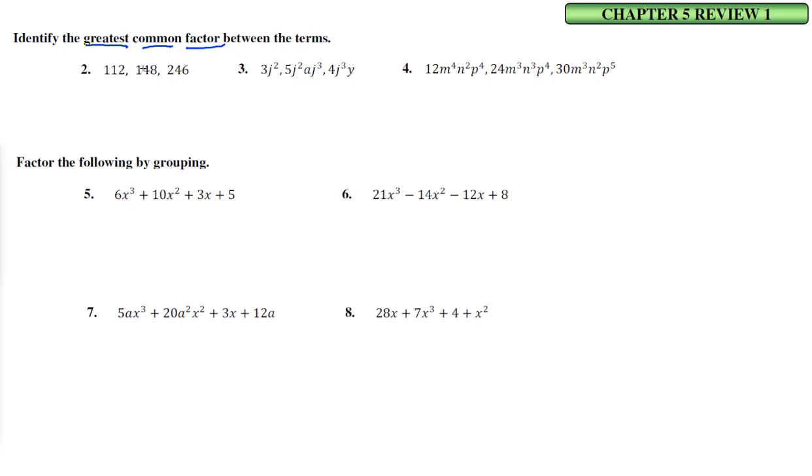This is hard. 112, 148, and 246. I'm going to have to use the prime factorization of this. 112 is 2 and 56, 2 and 28, 2 and 14, 2 and 7. This is 2, 2, 2, 2, 7.